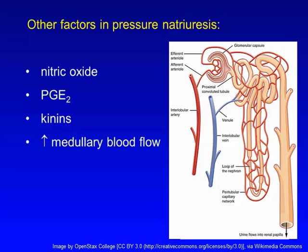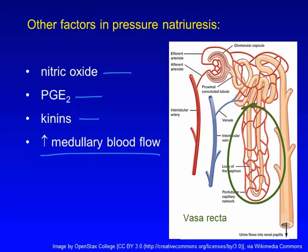Increases in other local renal vasodilators such as nitric oxide, prostaglandin E2, and kinins may also play a role in pressure natriuresis, and so may increased medullary blood flow in the capillary beds called the vasa recta. These capillary networks run alongside the loops of Henle and collect fluid and solute reabsorbed from the loops. Under conditions of volume expansion, these capillaries will be more full and have more flow through them. Like the peritubular capillaries that accompany the proximal tubules, these capillaries operate by starling forces, and so when they are more full, they too will have higher capillary hydrostatic pressure and lower oncotic pressure, both of which tend to oppose sodium and water reabsorption.